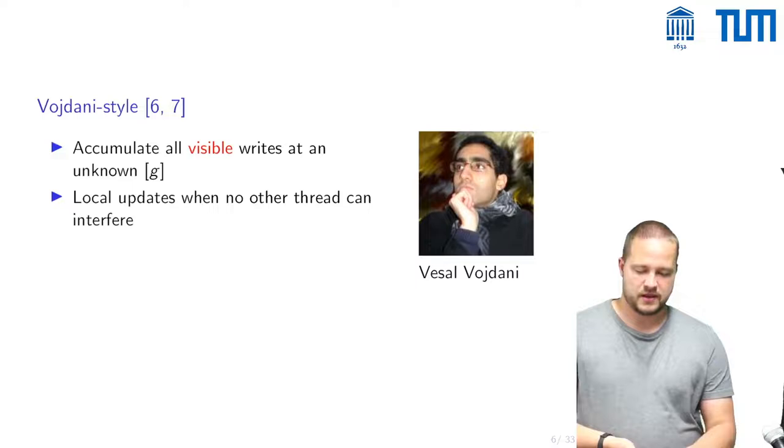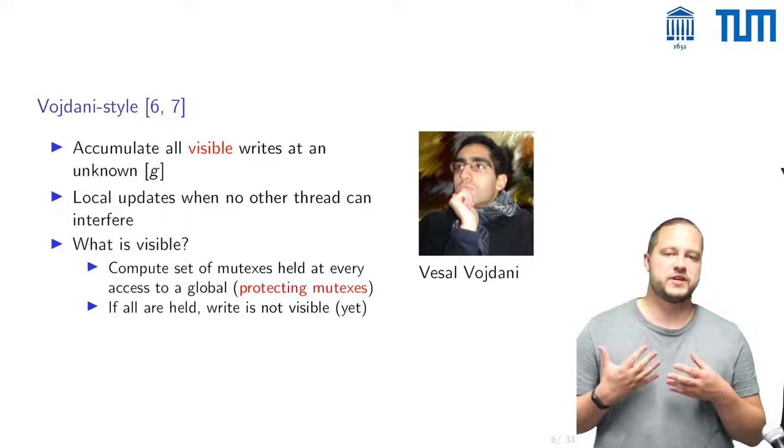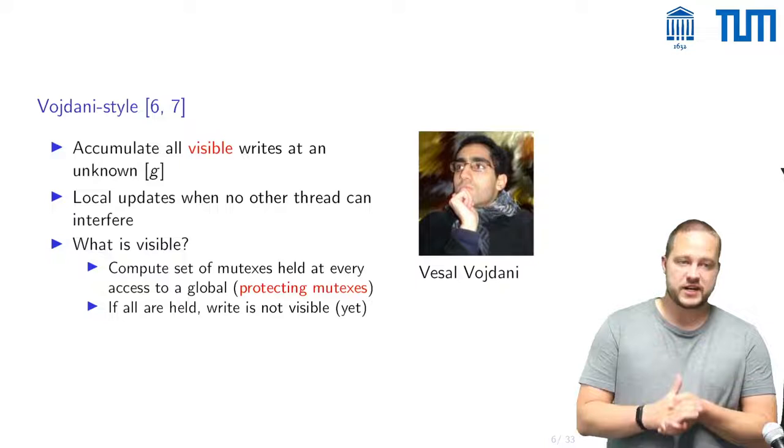Now the question of course is what is visible and here this works by computing a set of mutexes that is held at every access to a global and this one calls the set of protecting mutexes.